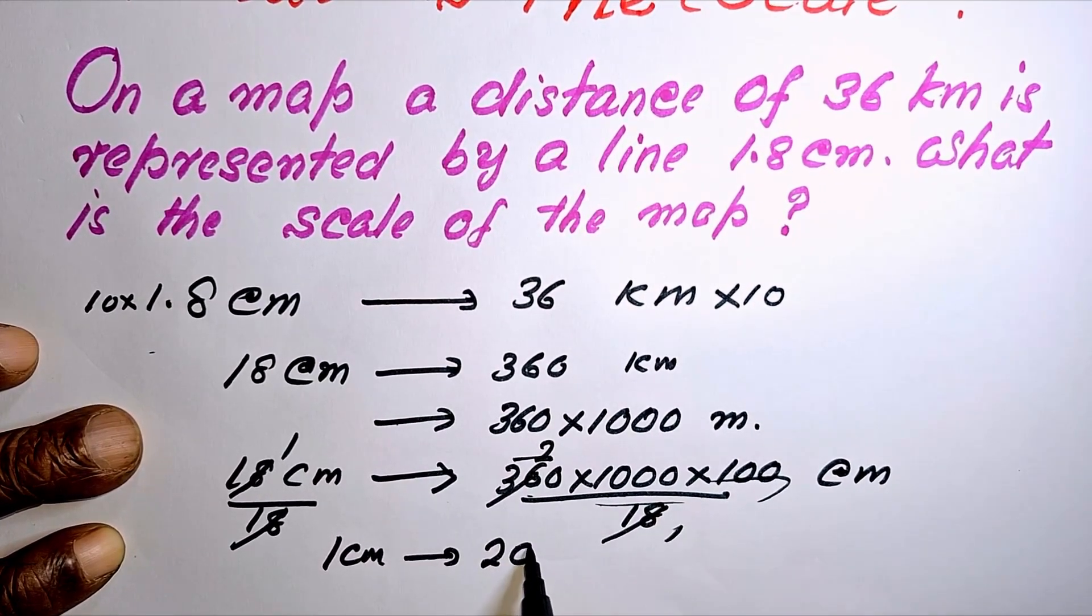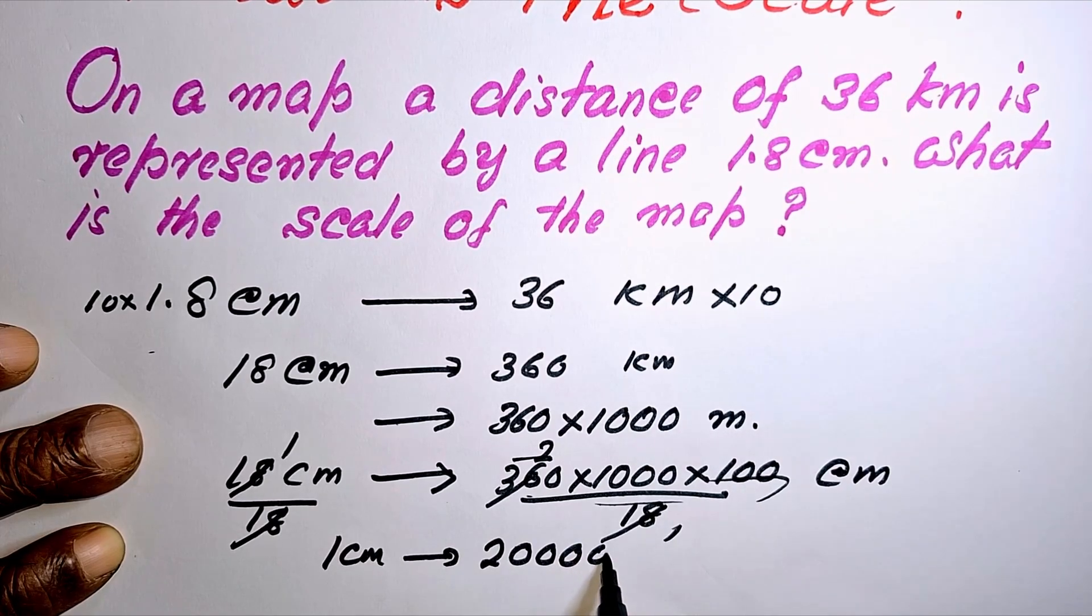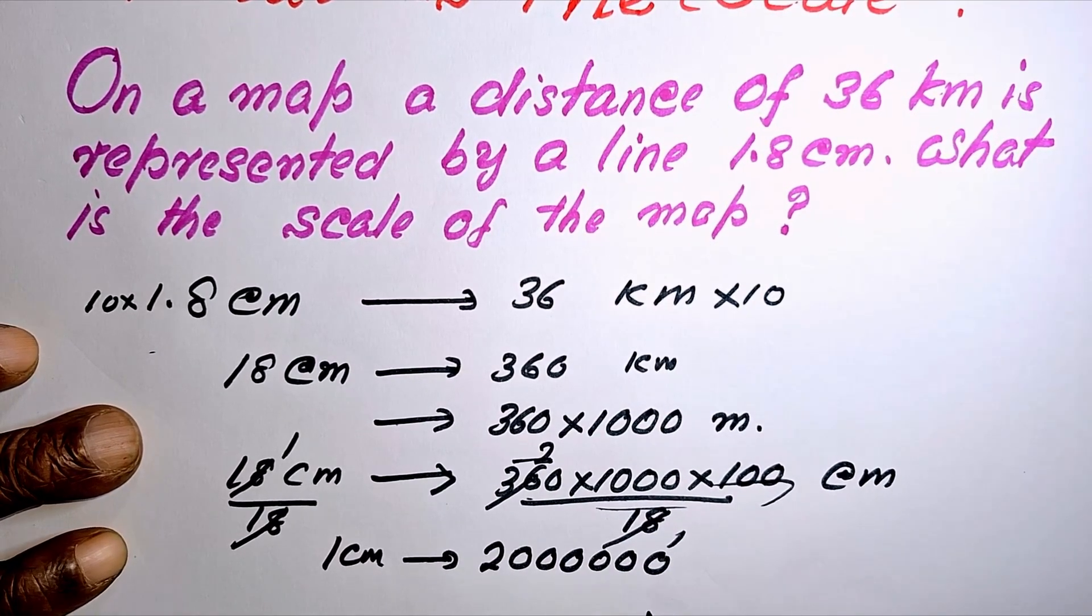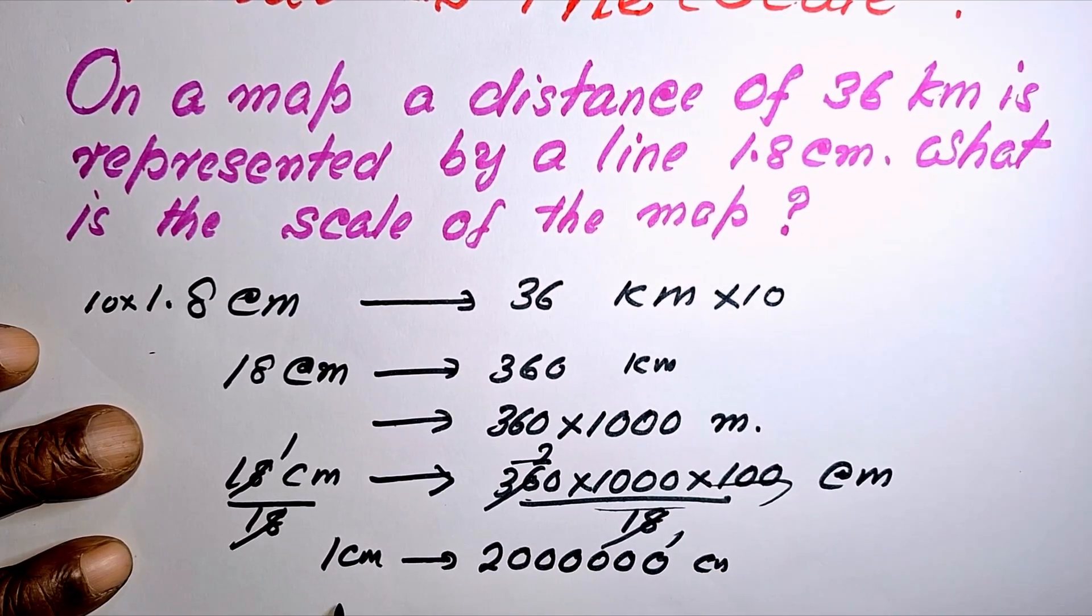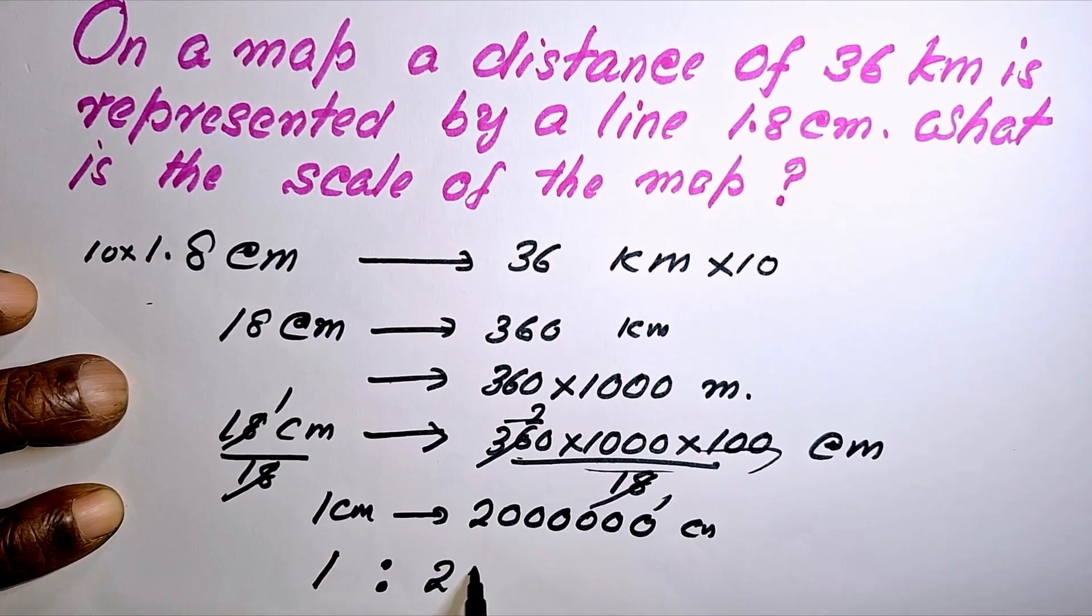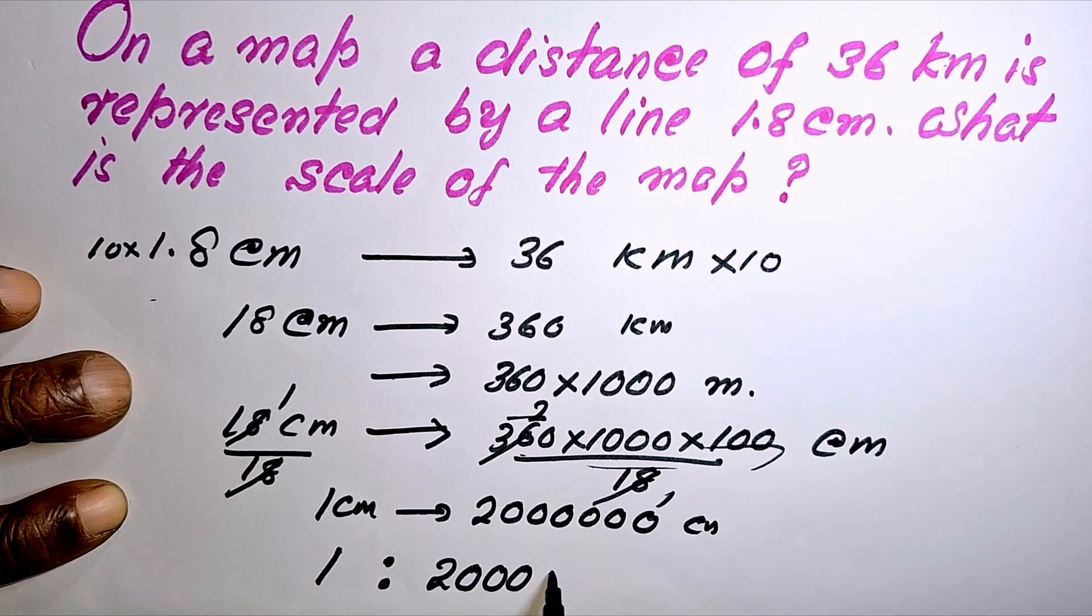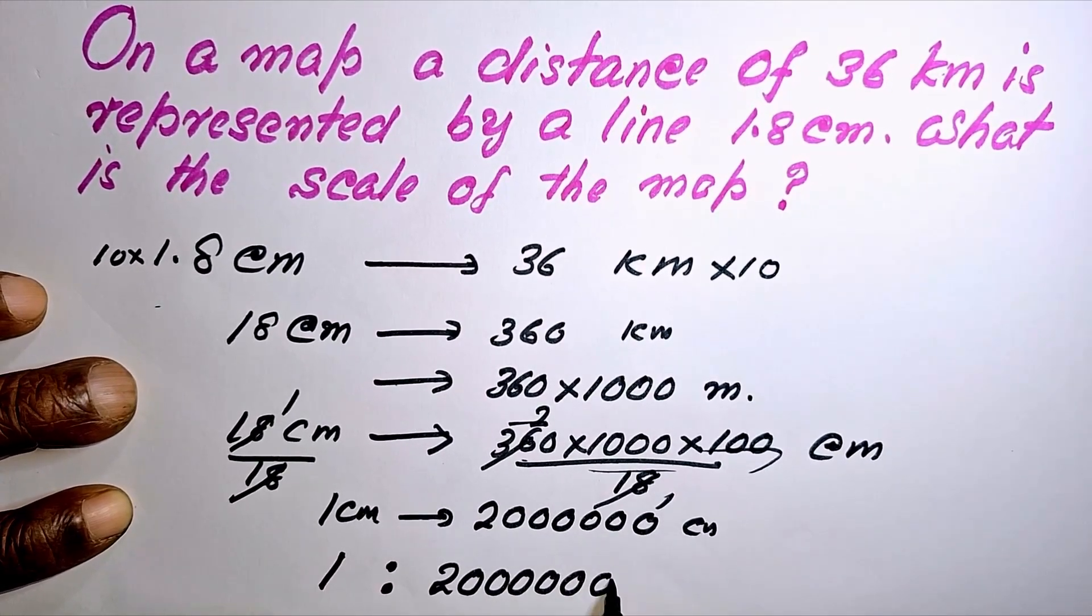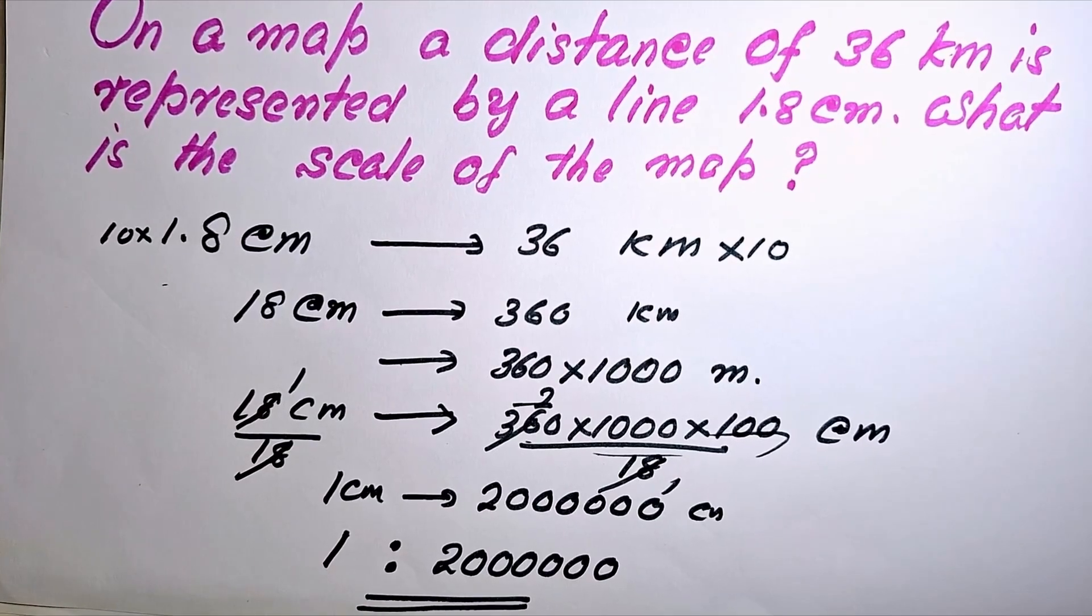how many zeros here? Six zeros there. That is, the scale is 1 is to 2 million. The scale is 1 is to 2 million.